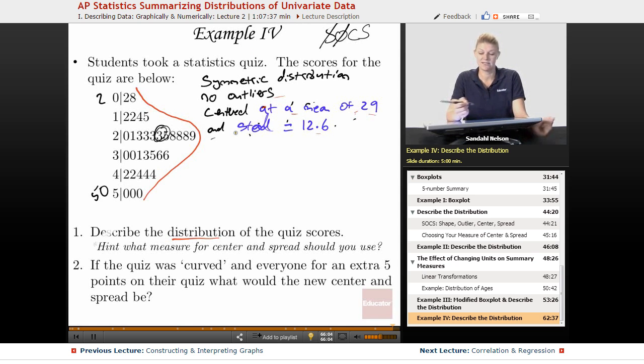Perfect. So we've used what we did from the last lesson. We talked about our SOCS, but now we can be much more precise about it. That's kind of what's nice about having the stem-and-leaf plot: we not only have the graph, but we also have the actual numbers to calculate these specific measures of center and spread. So now, if the quiz was curved and everyone gets an extra 5 points on their quiz, what would the new center and spread be?